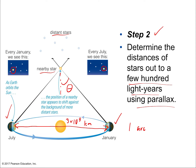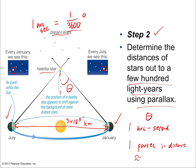One arc second of parallax angle — and one arc second is 1/3,600th of a degree, since there are 60 arc minutes in a degree and 60 arc seconds per arc minute — tells us a star is one parsec away. One parsec is about 3.4 light years. A light year is about 9 trillion kilometers.